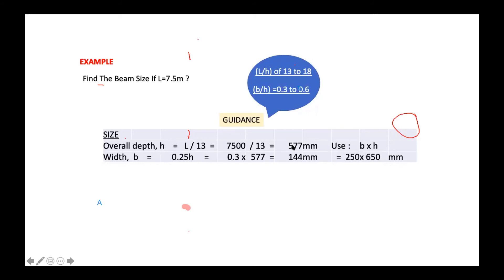So, your H now is 577 millimeter. And B, using the rule of thumb given, is 0.3 to 0.6. Okay. Now, let's say 0.3. This is 0.3 actually. 0.3. So, you can get time with H that you obtained just now.